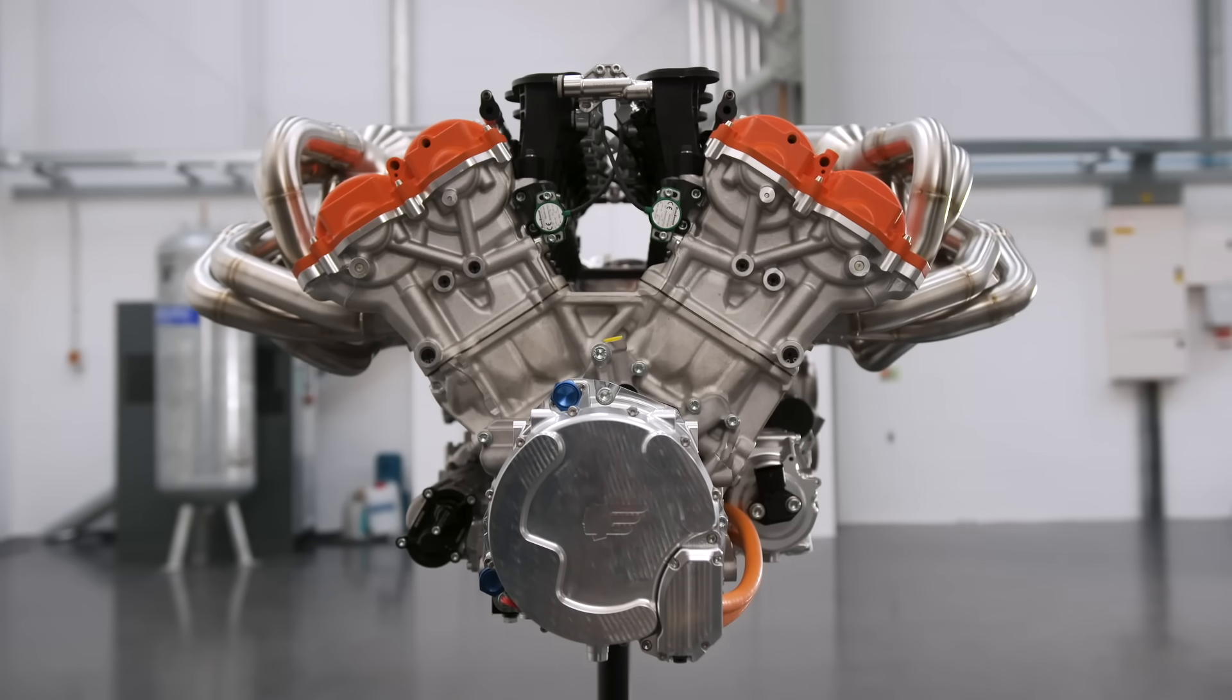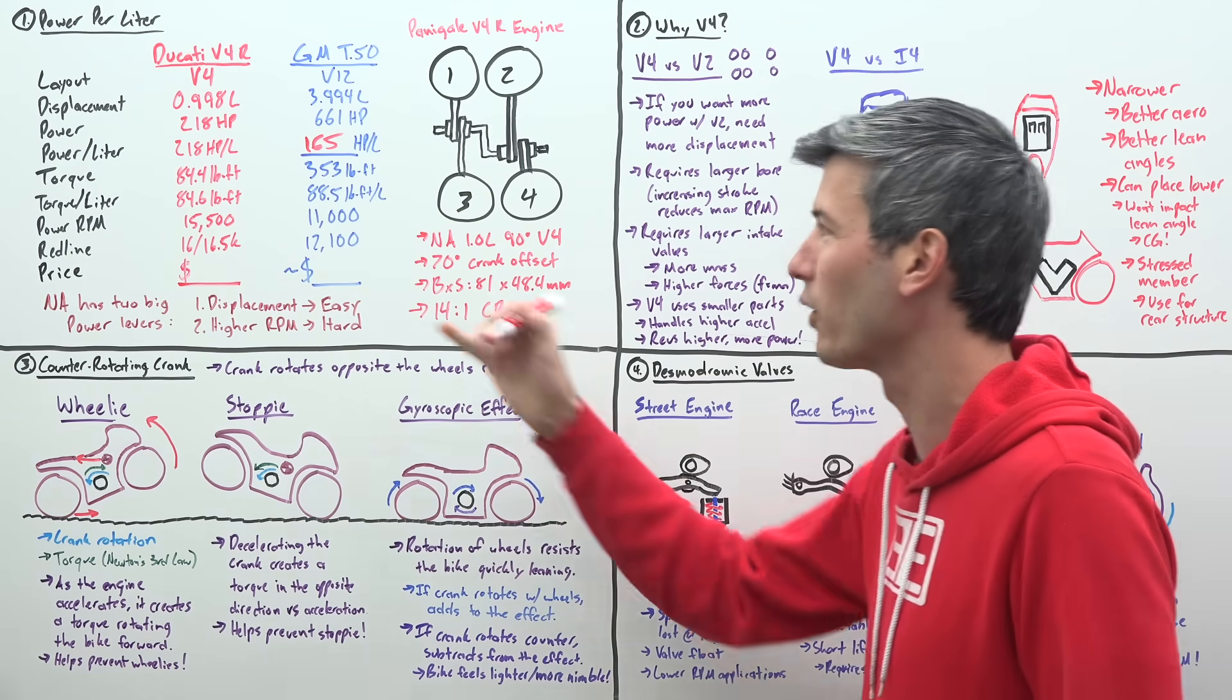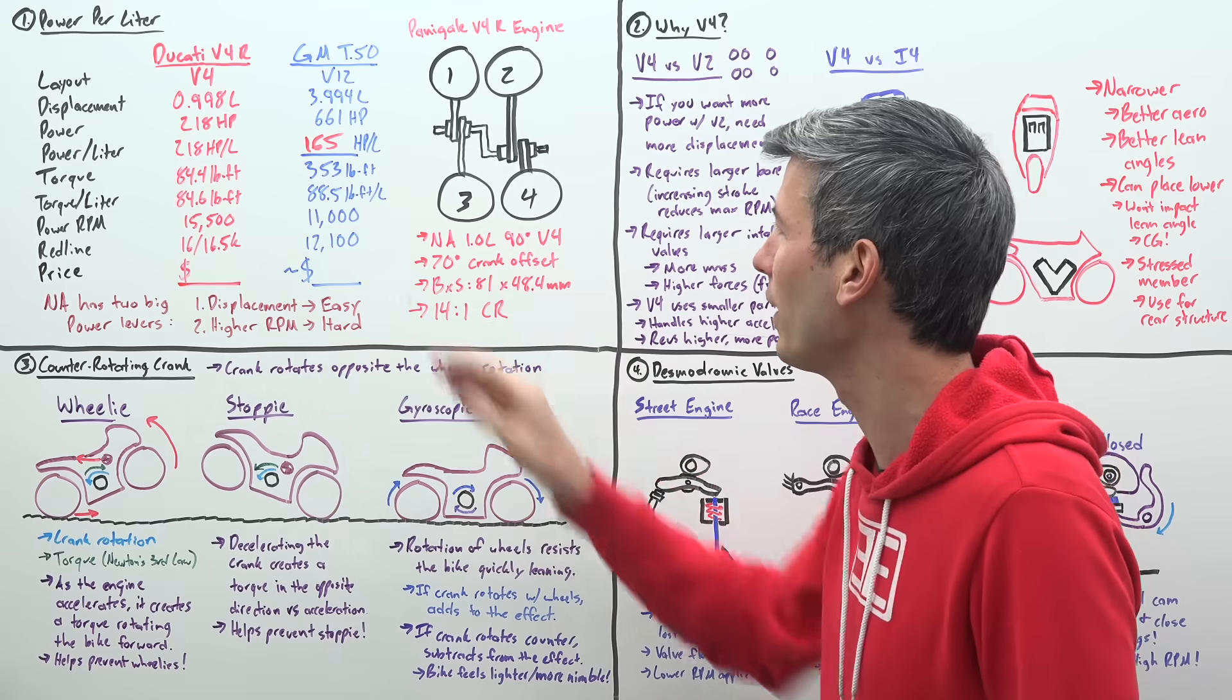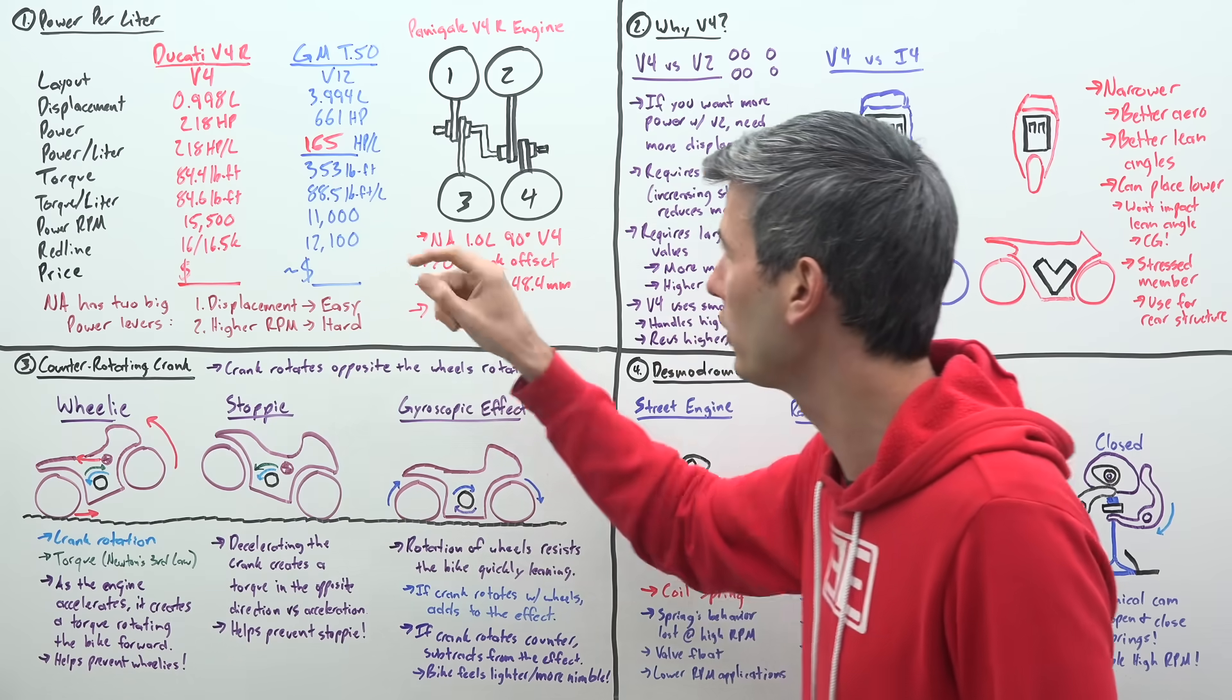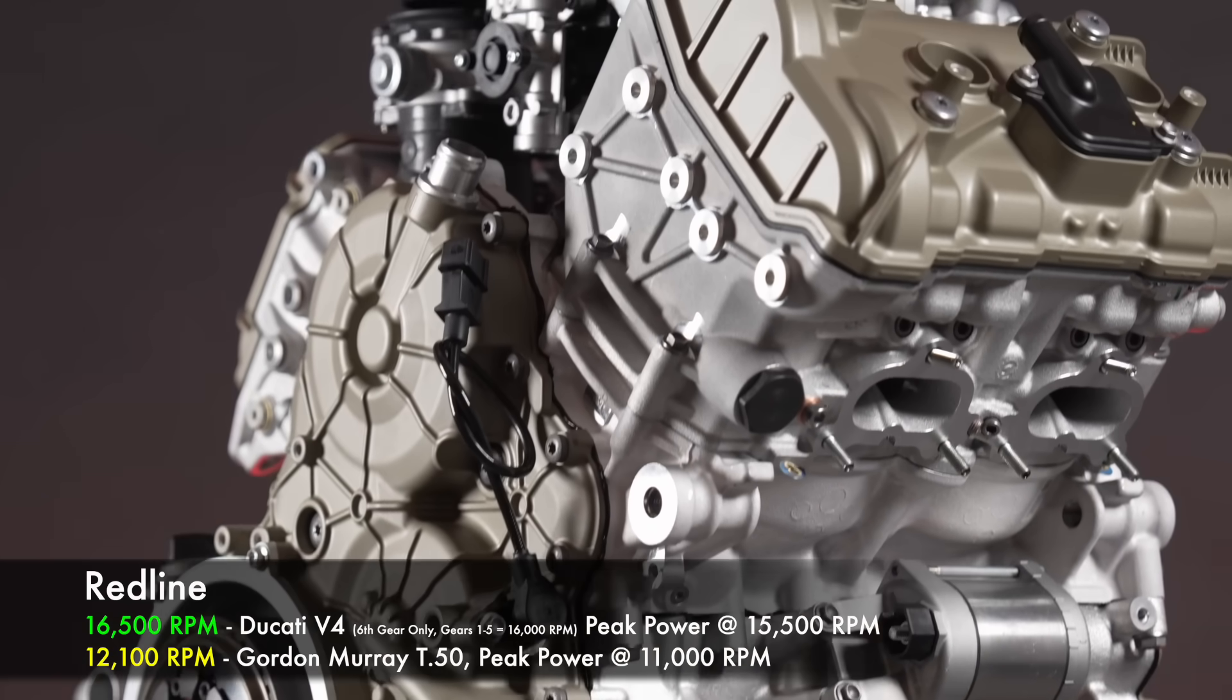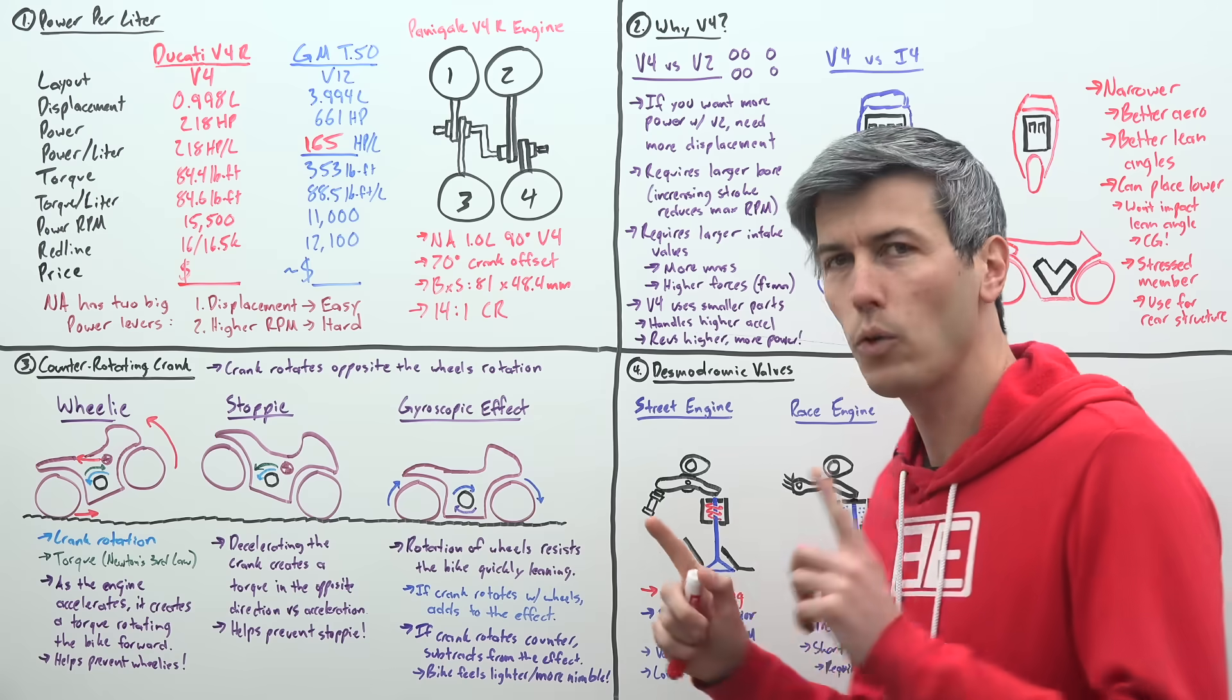Now, in terms of torque per liter, the T50 actually does have the advantage. Slightly more torque per liter, 88.5 pound-feet per liter versus 84.6. But the big reason why does this make more power per liter in the Ducati V4 versus the Gordon Murray Cosworth V12? Well, it's because it's revving higher to about 16,500 RPM versus 12,100 RPM redline on the T50.